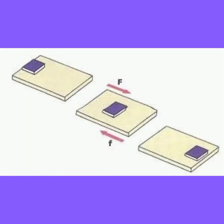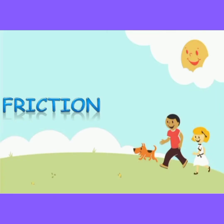Let us see an example. When we push a book on a table, it stops after moving a certain distance. This is because the frictional force acts between the surface of the table and the book, slowing down the movement of the book until it stops. Let us see a few more examples of frictional force in our daily life.